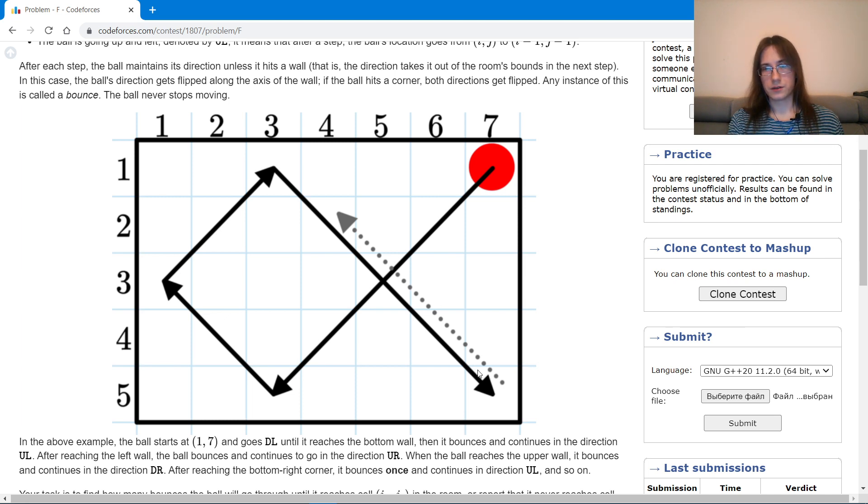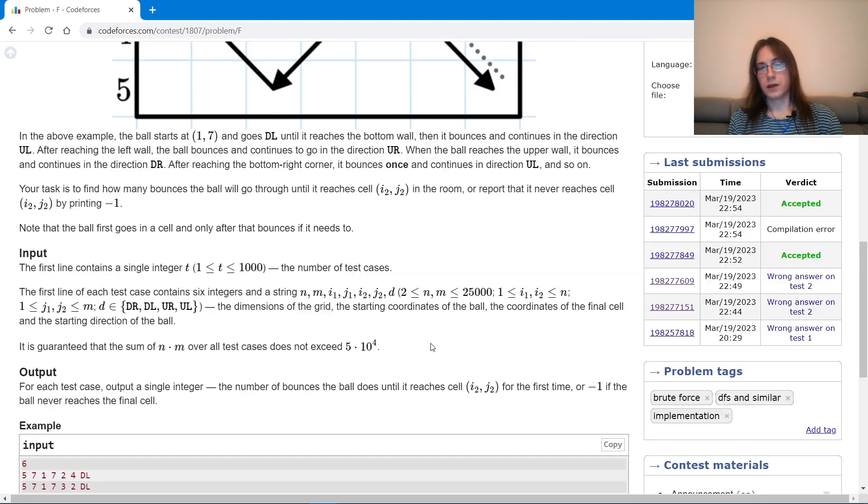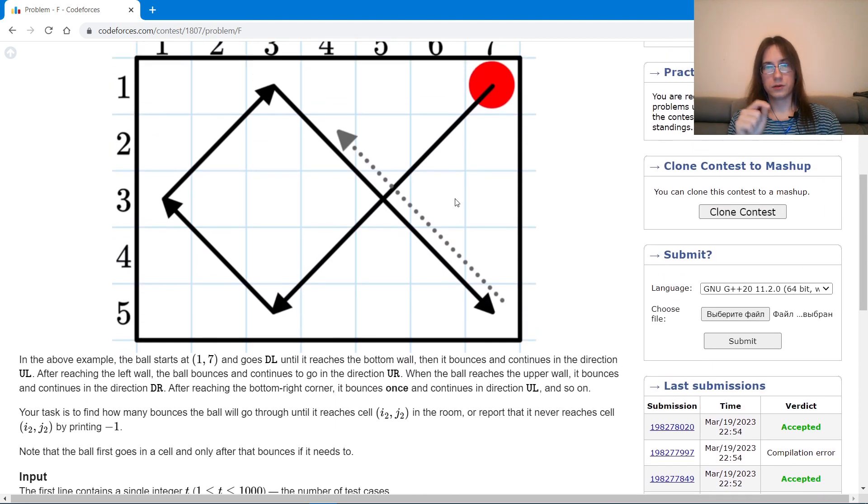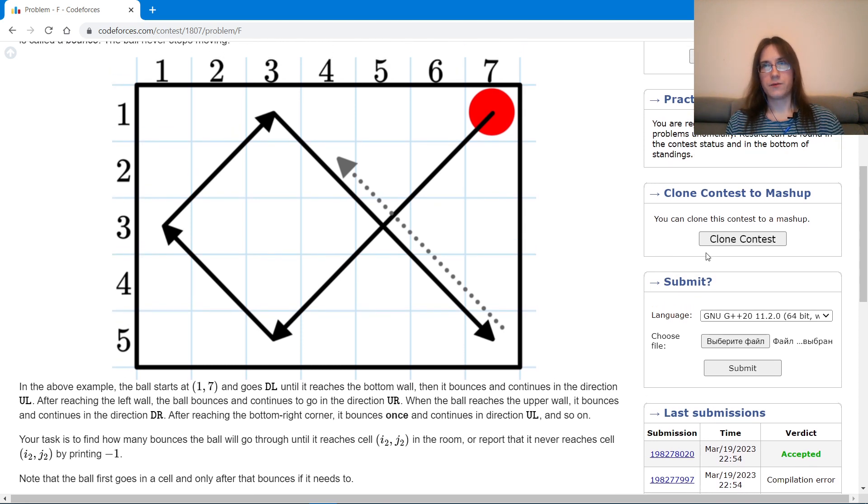A bounce off an angle is counted as one bounce, not two. The constraints were small enough that you could run a simulation, moving the ball by one until it either gets into the desired cell or we made too many operations. We can arrive into one cell from four different directions, so if we have made four times n times m operations and still didn't reach the goal, it means we're stuck in a loop.